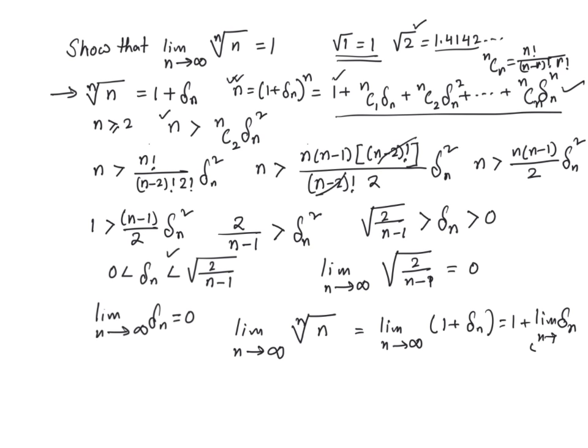But this guy is nothing but 0, so we just found out that the limit as n approaches infinity of the nth root of n is nothing but 1.